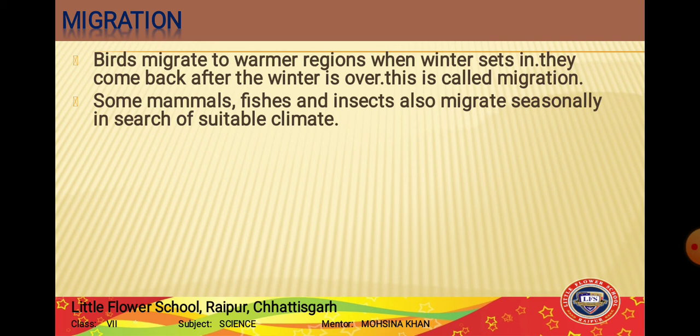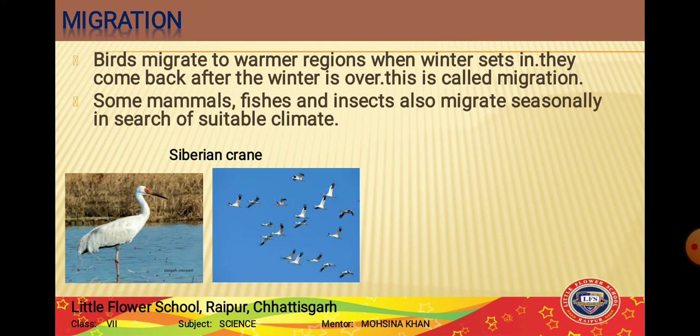Some mammals, fishes, and insects also migrate seasonally. Animals migrate when conditions in their habitat become unfavorable and unsuitable for living. One of the most common migratory birds that comes to India every year is the Siberian crane. It is named Siberian crane because it lives in Siberia, which is a very cold place.